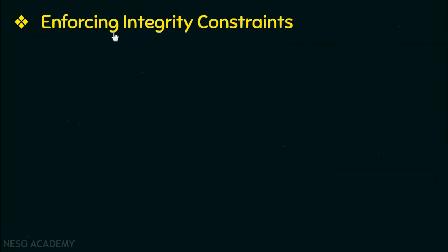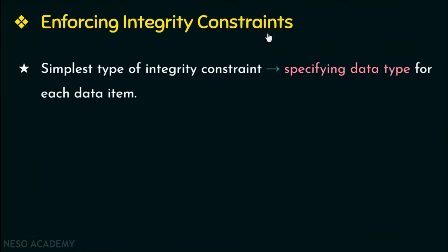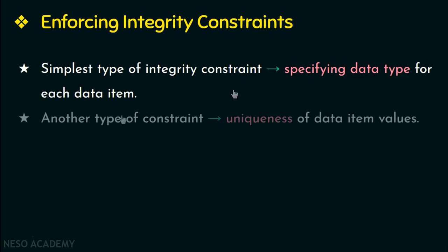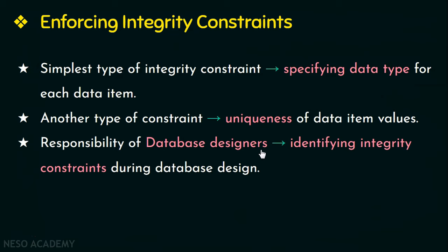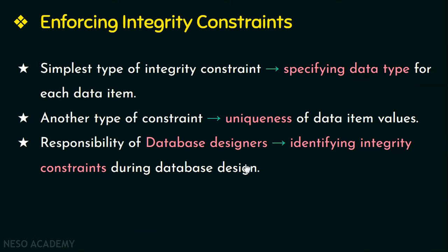The next advantage is enforcing integrity constraints. DBMS should be capable of defining and enforcing different types of integrity constraints on data. The simplest type is specifying the data type for each data item, such as integer or string. Another type is the uniqueness constraint — for example, roll numbers of students must be unique. It is the responsibility of the database designer to identify what integrity constraints are required during database design.